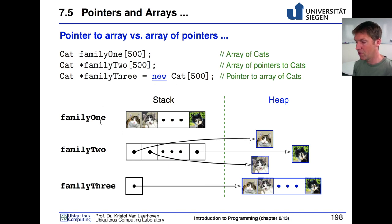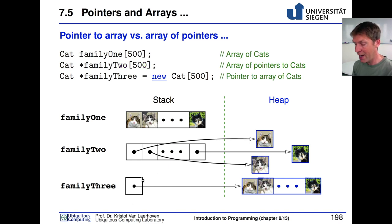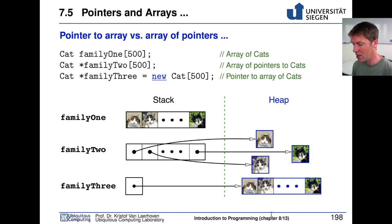If you already know you're going to have exactly 500 cats, creating them directly on the stack is sufficient. However, if you don't yet know how many cats you'll need, then family two or family three are the statements of choice — you create an array or pointer on the stack before runtime, and then fill them later on the heap.